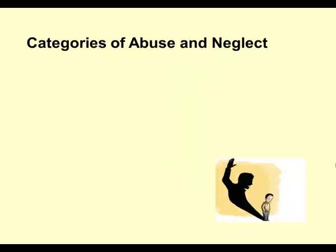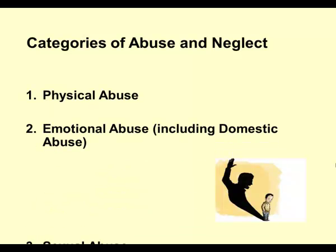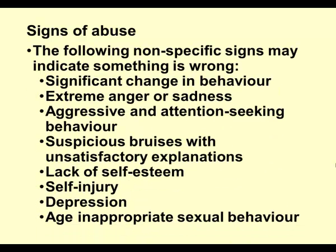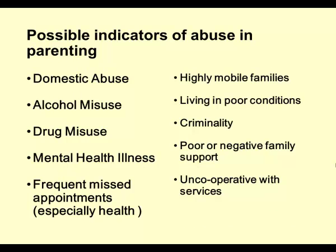Sibling-on-sibling abuse is more common than many realise — and cousins, uncles too. The different categories of abuse and neglect are: physical, emotional, sexual, and neglect. You will not see abuse directly in most cases — you'll pick it up indirectly. These are possible indicators where you need to be aware that abuse might be happening. Highly mobile families who keep moving are a concern — they can fall through the net, moving from one authority to another and falling out of area networks under child protection.